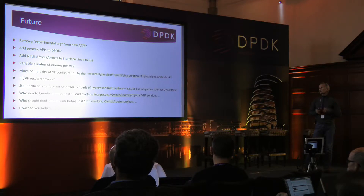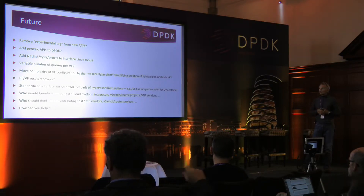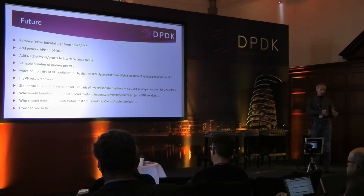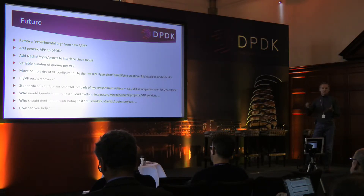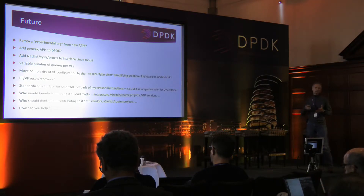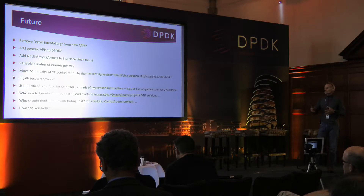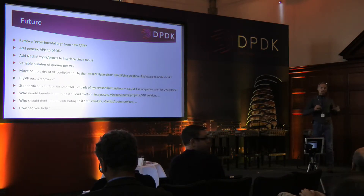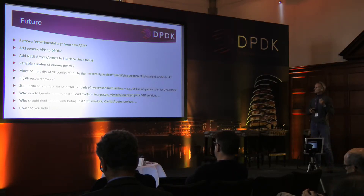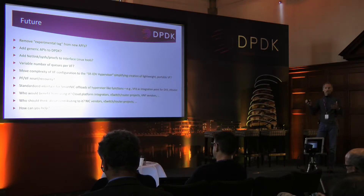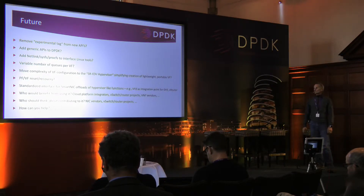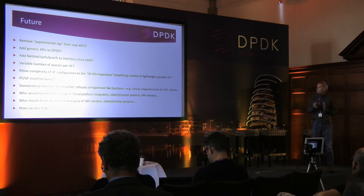We also believe that having a variable number of queues per virtual function is something needed, at least in our environment. One can imagine virtual function one needing four queues for QoS and virtual function two needing 16 RSS queues, and this has to be managed more dynamically — not at compile time or even DPDK build time. We also believe that if we move more complexity of SR-IOV configuration into the hypervisor, the VF could be less complex, more portable, and maybe enable us to build future NICs as some sort of virtual hardware where applications are less dependent on drivers.